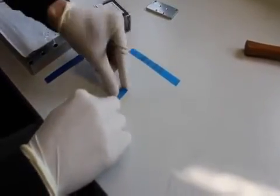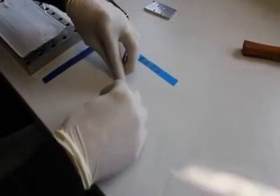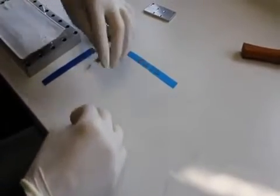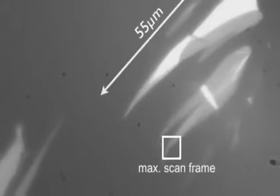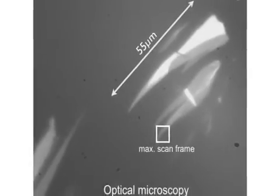After exfoliation, we inspect the flakes with the help of an optical microscope and characterize their thickness with the help of Raman spectroscopy using the G and 2D bands.